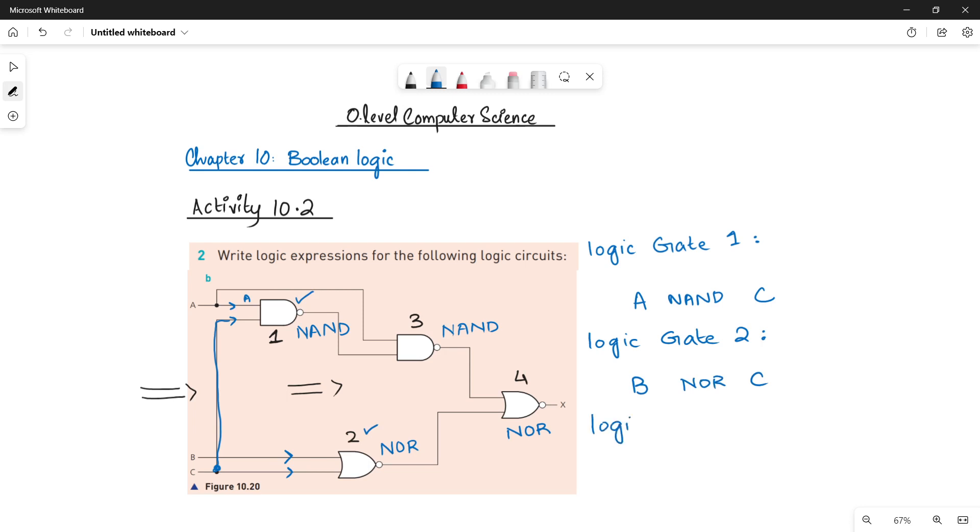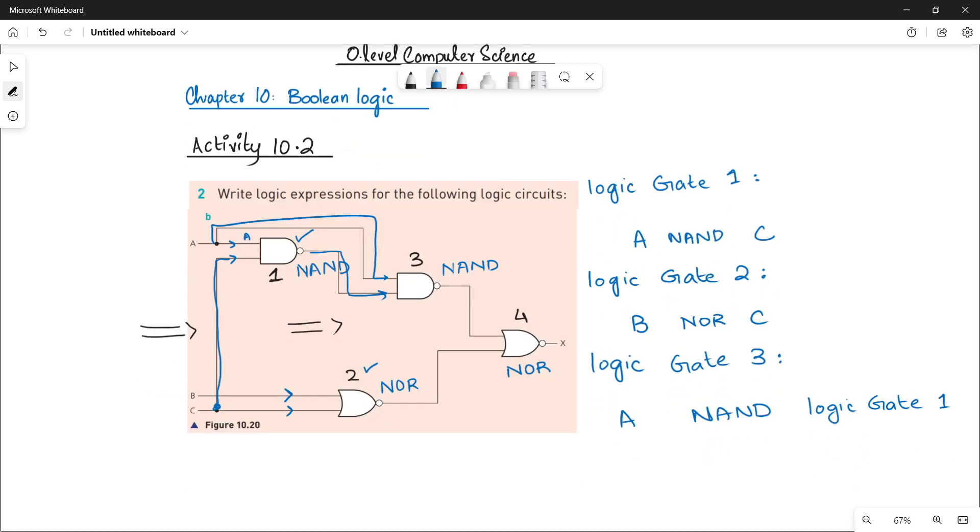Now look very carefully at logic gate three. The inputs of logic gate three are: the first one is A and the second one is logic gate one. Yes, logic gate one is the output. The output of logic gate one is going to logic gate three as an input. So what you will be writing: logic gate three is a NAND gate whose first input is A and whose second input is coming from logic gate one.